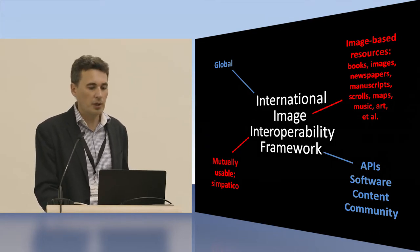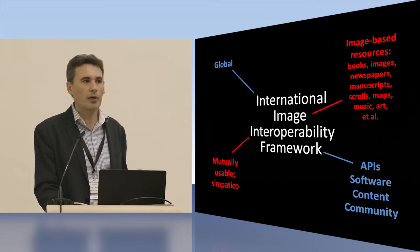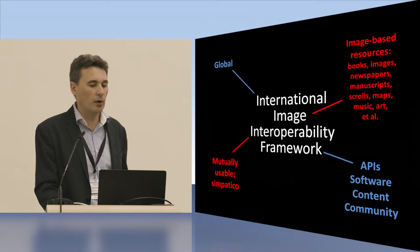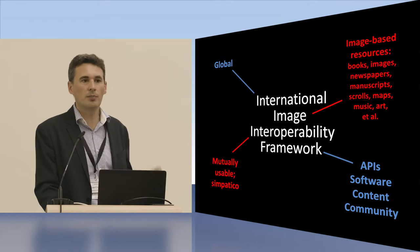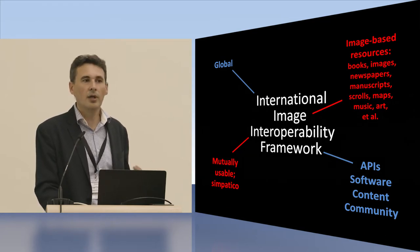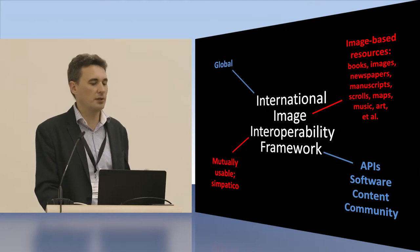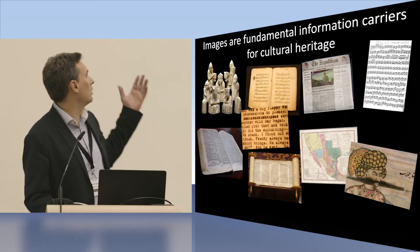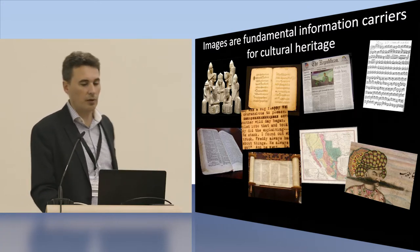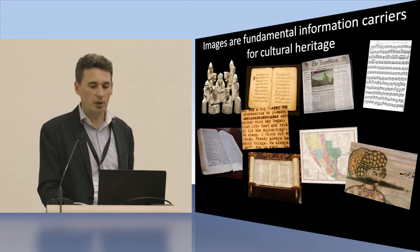The idea, as Josh described, is: can we come up with a global framework for sharing all image-based resources in a mutually useful way, reducing the friction of sharing materials in a framework that includes not just APIs, but software, content, and community? Because while manuscripts are an important part of our collections, they're only part of our collections.